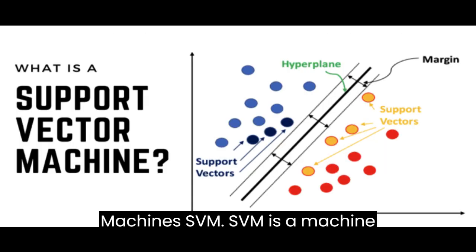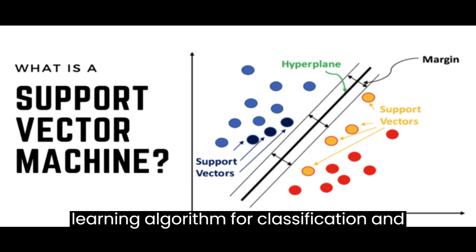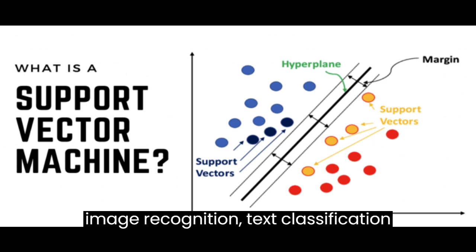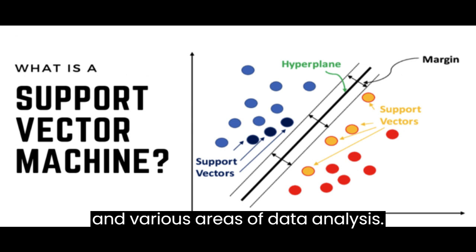Support vector machines (SVM). SVM is a machine learning algorithm for classification and regression tasks. It's used in image recognition, text classification, and various areas of data analysis.